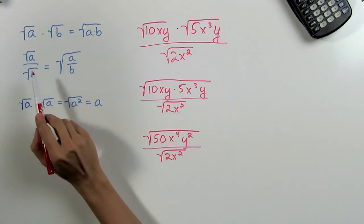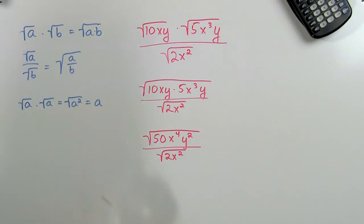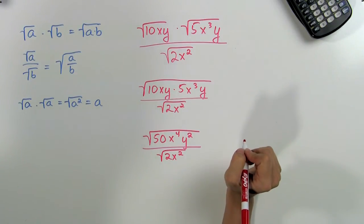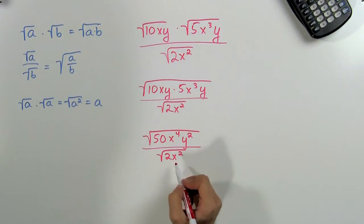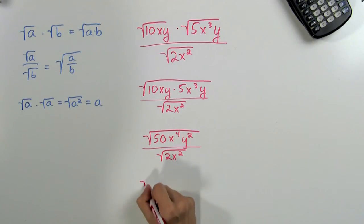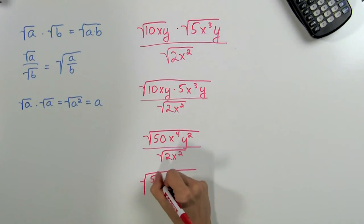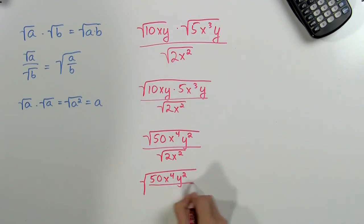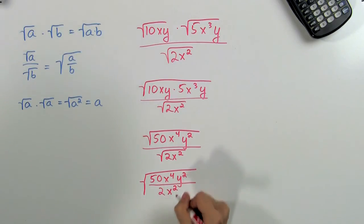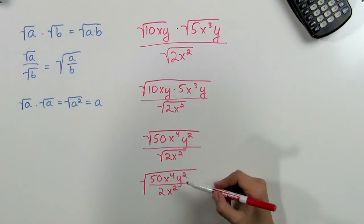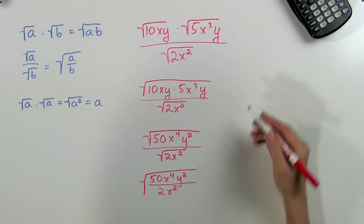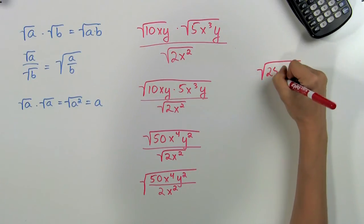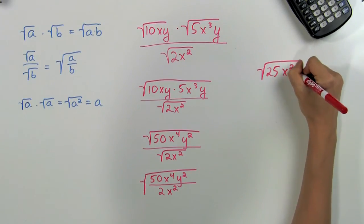Now we can use our second rule that the square root of a divided by the square root of b is equal to the square root of a divided by b. So here we can rewrite our problem as the square root of 50x to the fourth y squared divided by 2x squared. Dividing inside the square root gives us the square root of 25x squared y squared.